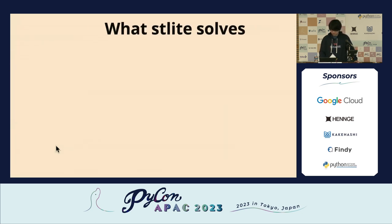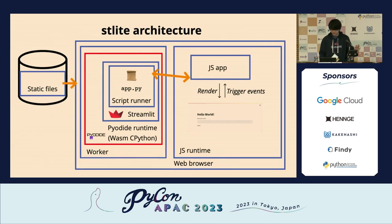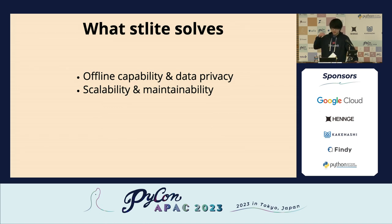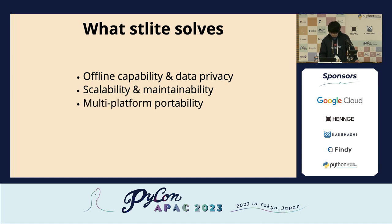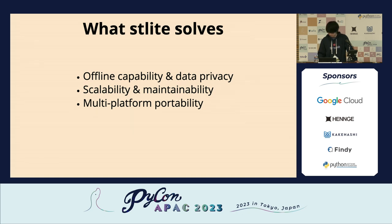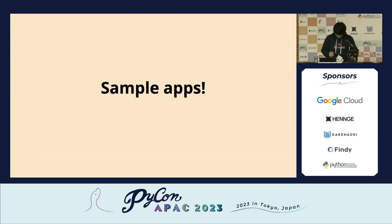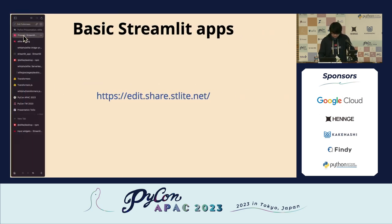Now the server is just a static file server hosting only static files loaded at the initial phase, and all Python dynamic parts run inside the web browser. As a result of this serverless architecture, we now have offline capability, data privacy, scalability, and maintainability — in addition to all the existing benefits of Streamlit. Also, since it runs on web browsers, we get multi-platform portability, as we can use web-based applications on laptops, smartphones, and a wider range of devices. Now it's time to show some demo applications to see what we can do with STLite.